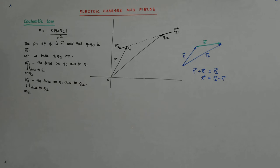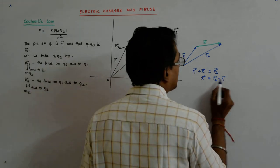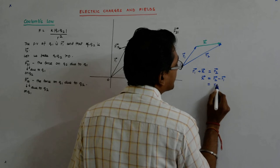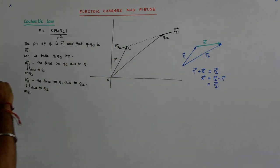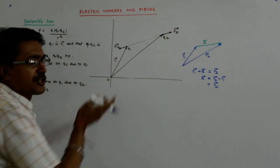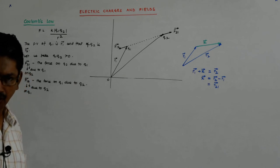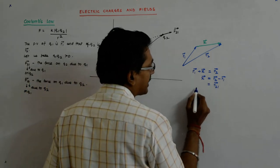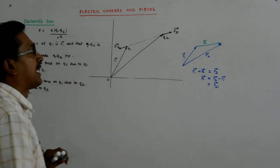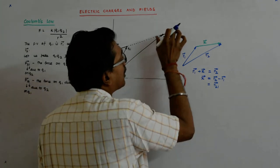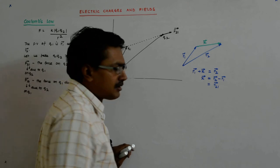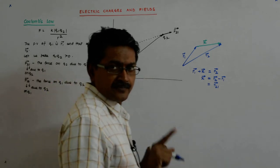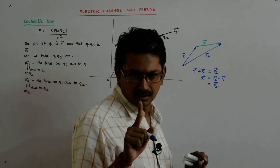It is R2 minus R1 and this I call as R21. So somehow I have got a vector in the direction of F21. Now, I will try to find out a unit vector in that direction. What is a unit vector? A vector which has length 1, unity.